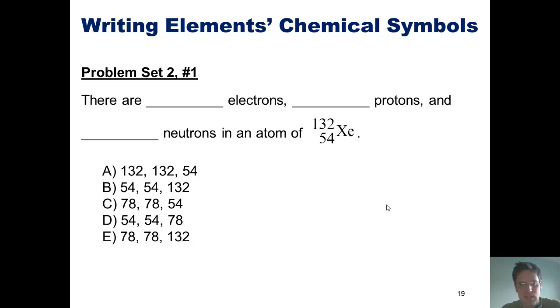Hence, if I take 132 and I subtract 54 from it, that will give me the number of neutrons in this particular isotope of xenon.